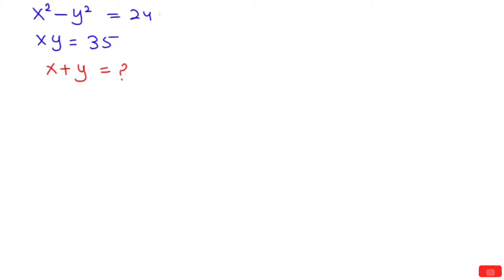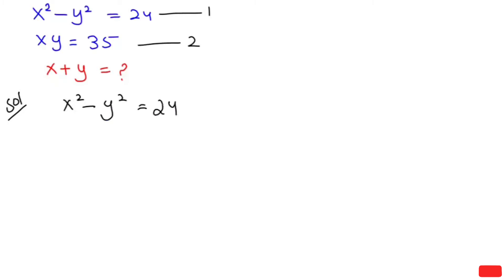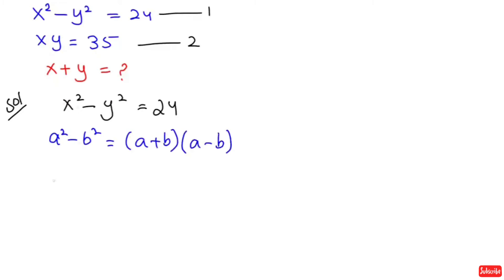First, I'm going to name this equation 1 and this is equation 2. I'm going to start my solution by taking equation 1, and here I'm going to use the algebraic identity a squared minus b squared is equal to a plus b times a minus b. So this will turn to (x plus y)(x minus y) is equal to 24.